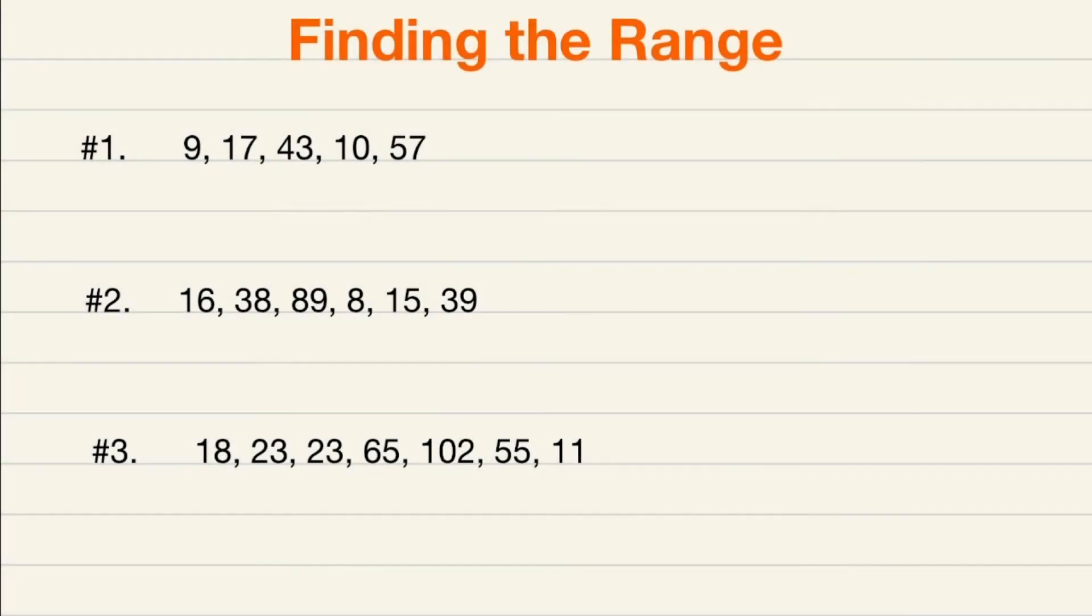In this video we are talking about how to find the range of a data set. If you take a look at number one, we have five numbers in our data set. Before I do anything else, I'm going to order my numbers from least to greatest. So my smallest number is 9, followed by 10.